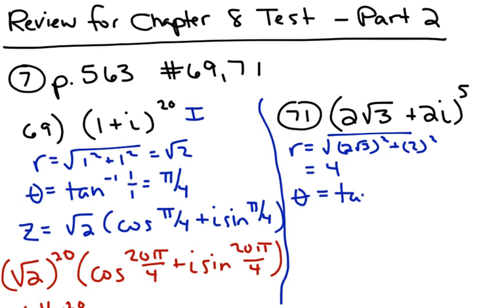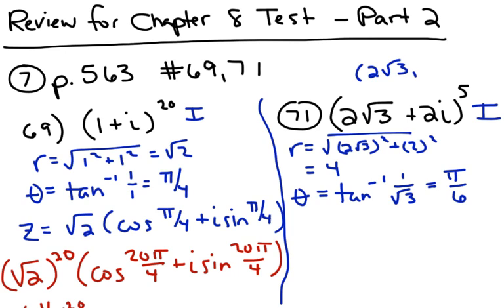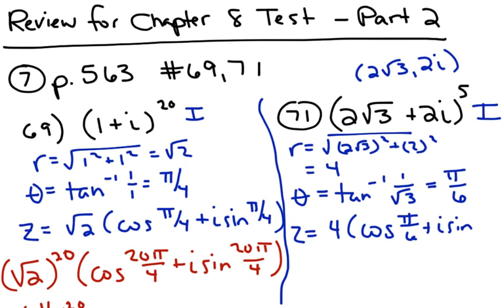Theta is going to be the inverse tangent of 2 over 2√3, which is the same as 1 over √3. The inverse tangent of 1 over √3 is 30 degrees, which is pi over 6. Since this is also in quadrant 1 — remember, if you're graphing this point on the complex plane, it works just like graphing any other ordered pairs; if they're both positive, you're in quadrant 1 — I'm going to leave pi over 6 as the answer. So the polar form is 4 cosine(pi/6) plus i sine(pi/6).